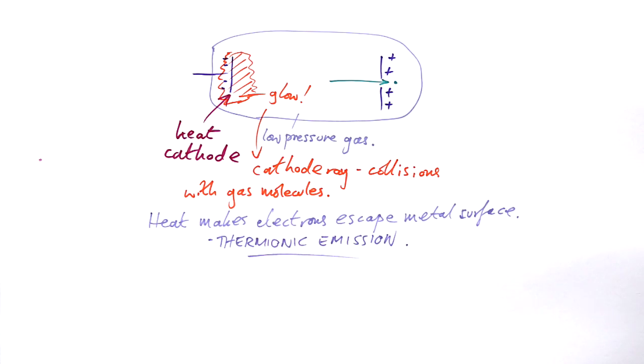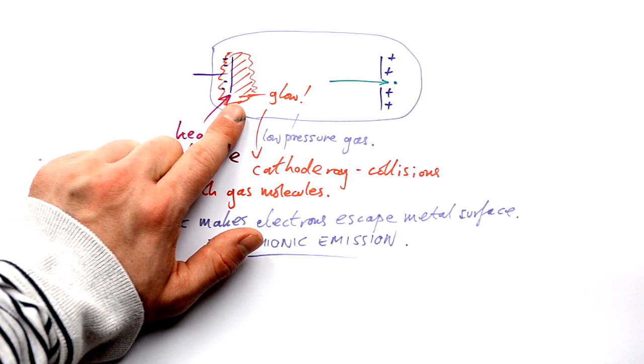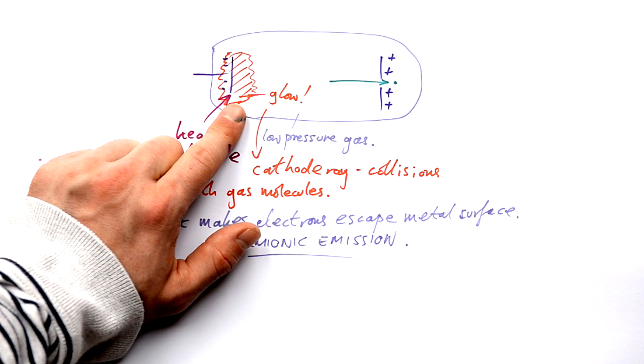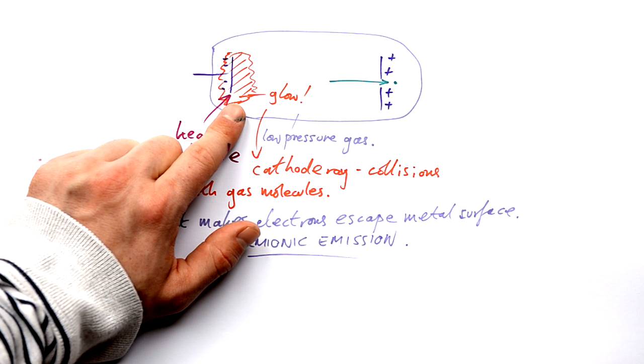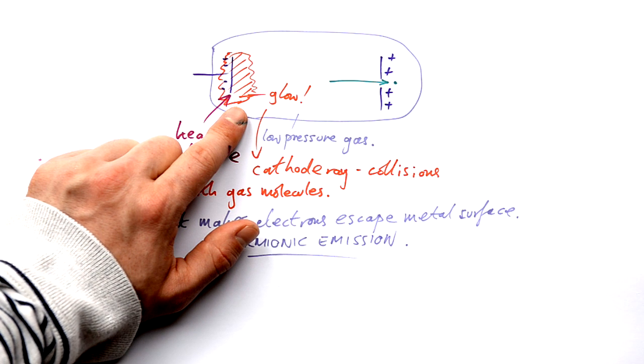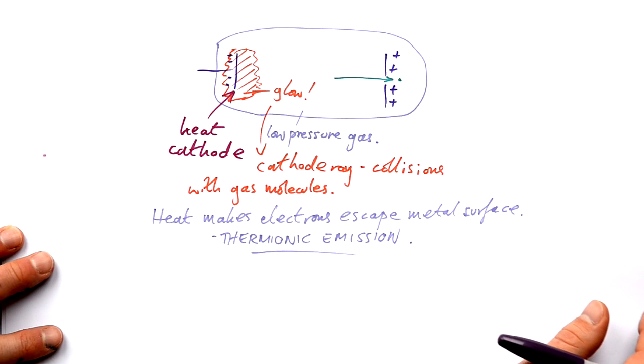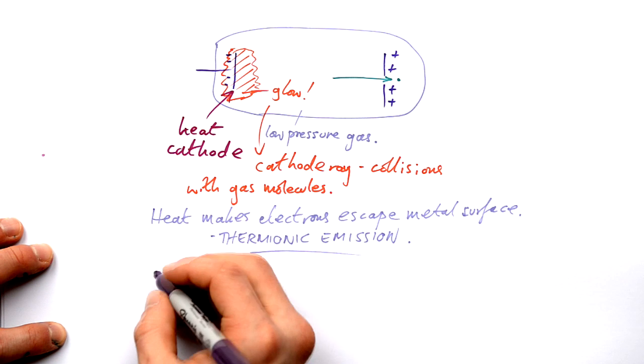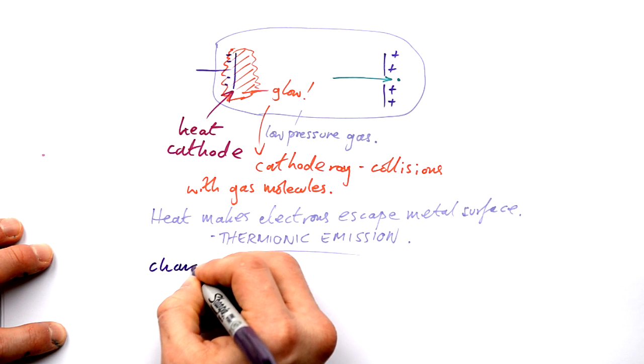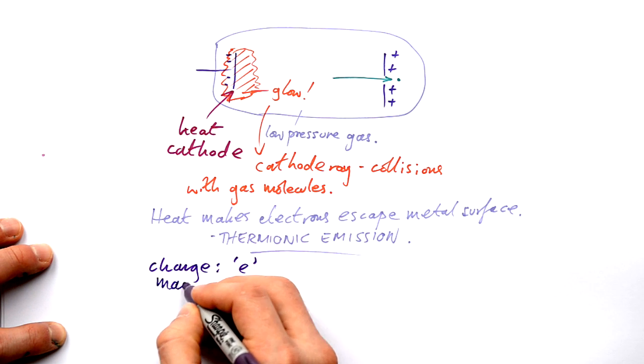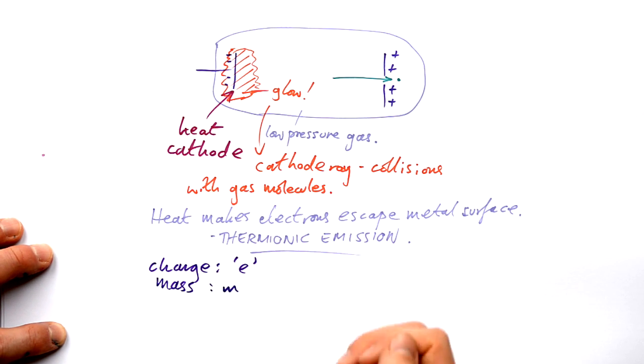They said we think that whatever's being released, we think these are negatively charged particles, but we don't know exactly what they are, what their mass is, what their charge is, or anything like that. So started the endeavor to discover everything that we possibly could about these particles which we now call electrons. We're going to assume these things have a charge and we're going to call this charge E, and we know they have a mass as well, we're going to call that M. But they couldn't find either of these things individually. The only thing they could find out to begin with was the specific charge, and that equals E over M, and we're going to be seeing a lot of that in this video.